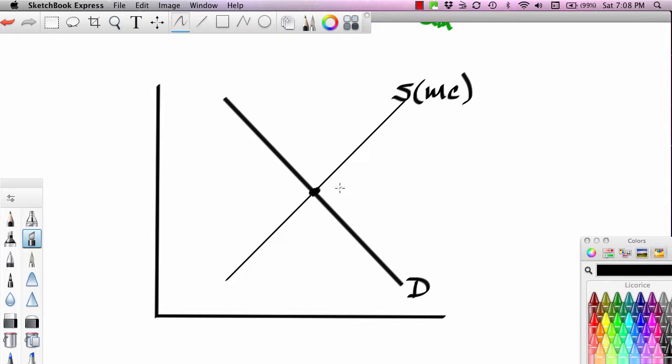And then this is the equilibrium point. In a competitive situation, supply equals demand. So we'll read across. This is PE. We'll read down. This is QE.